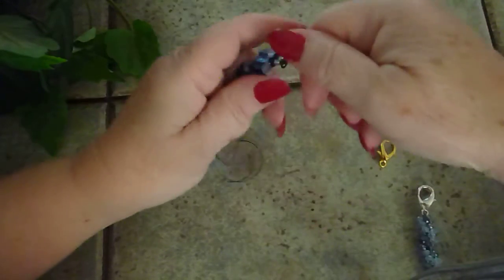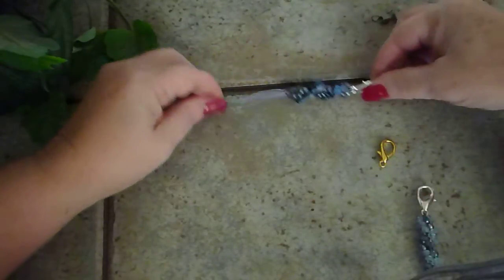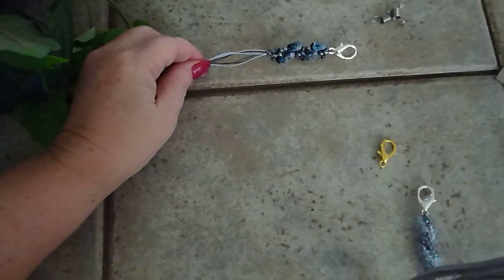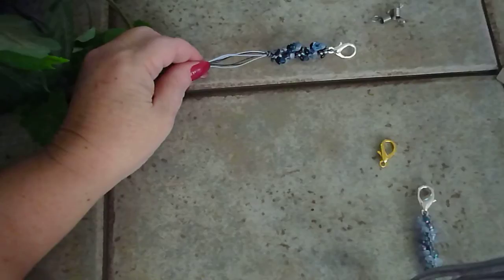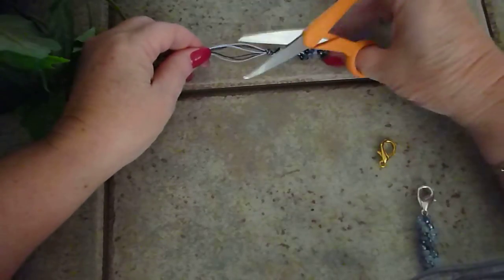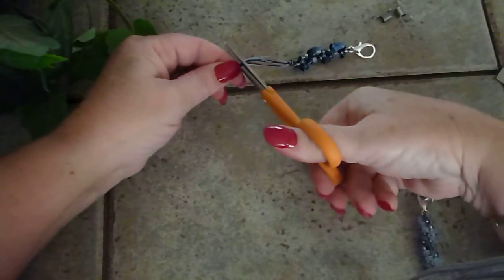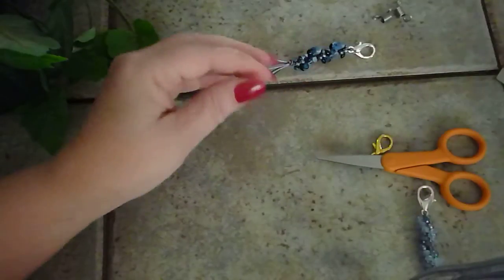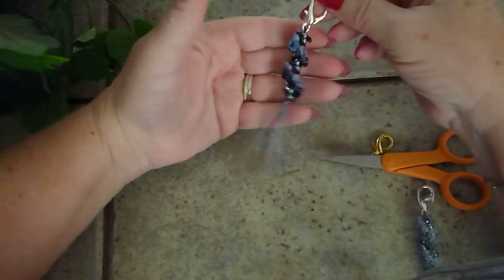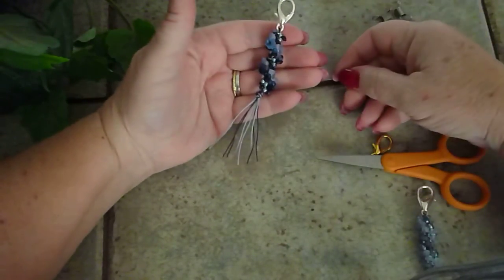Okay. And there you have it. And then what I normally do is I leave like almost like a two inch tail, one and a half inches to two inch tail. So you just cut off the ends and what you're left with is a cute little key fob.